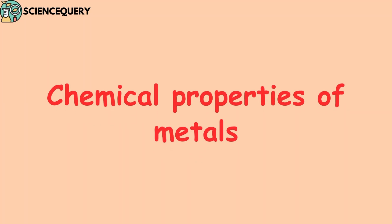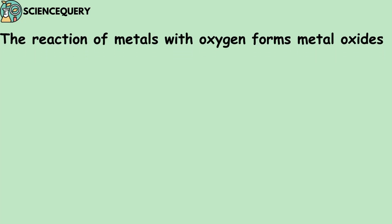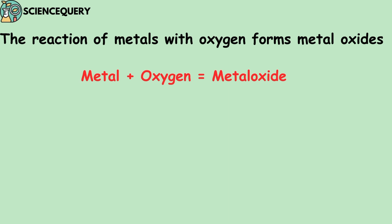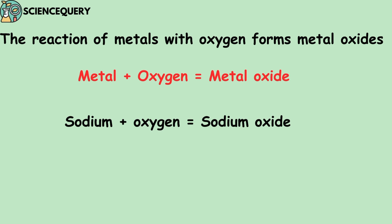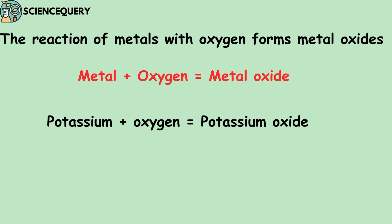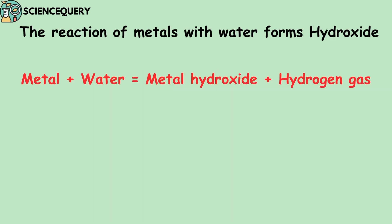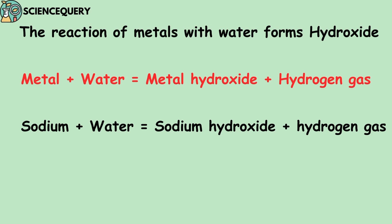Now let us see the chemical properties of metals. The first chemical property is the reaction of metals with oxygen. Metals when they react with oxygen form metal oxide. For example, sodium when it reacts with oxygen forms sodium oxide, and potassium when it reacts with oxygen forms potassium oxide. The second chemical property is the reaction of metals with water to form metal hydroxide and hydrogen gas. For example, sodium when it reacts with water forms sodium hydroxide and hydrogen gas.